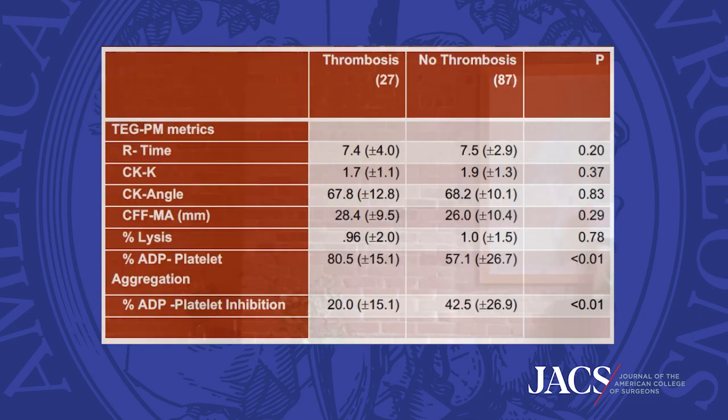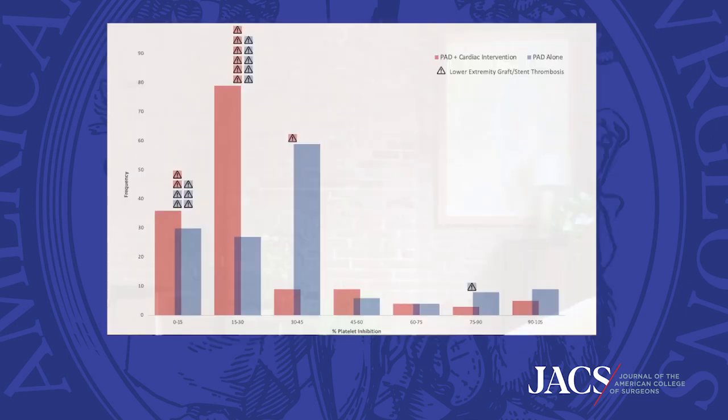27 patients experienced a major adverse limb event, and TEG-PM samples taken prior to the event demonstrated increased platelet aggregation and decreased platelet inhibition, as demonstrated by this histogram.